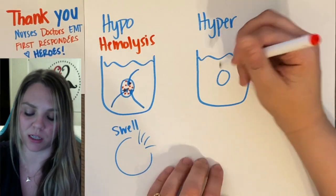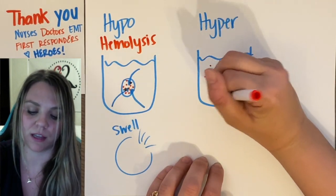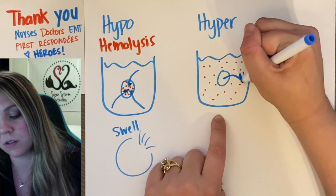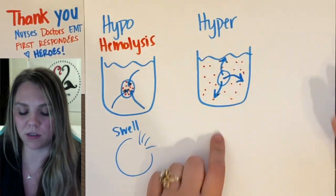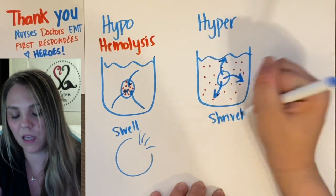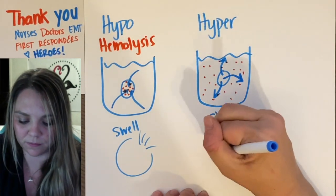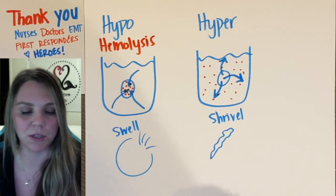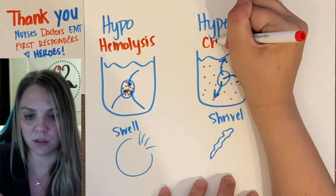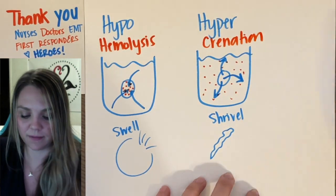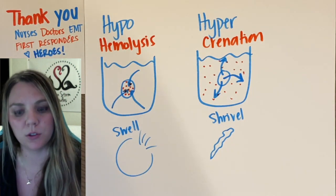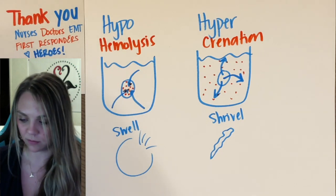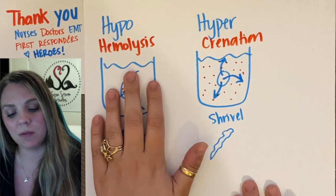In a hypertonic solution, there's all this salt on the outside in comparison to the inside, so water from the cell flows out into the solution and the cell shrivels up — it'll look like a little raisin and can't transport blood very well. This is called crenation — when your blood cell shrivels up.